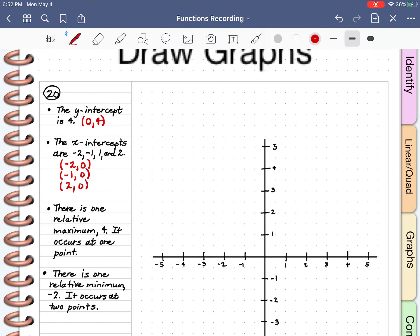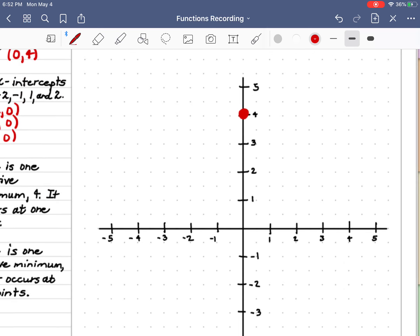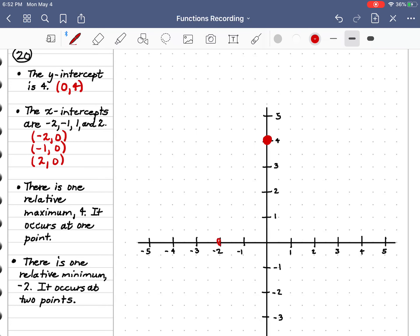So over none, but up to 4. And then negative 2, 0. Oops, didn't mean to do that. Negative 2, 0. Negative 1, 0. And then 2, 0. So I have plotted my intercepts.